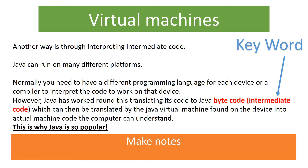However, Java actually has a workaround with this. It converts its language into what we call bytecode, which is like an intermediate code. This can then be translated by what's called a Java Virtual Machine, which is found on the device. It converts it into machine code that the computer can understand directly — and this is why Java is so popular.